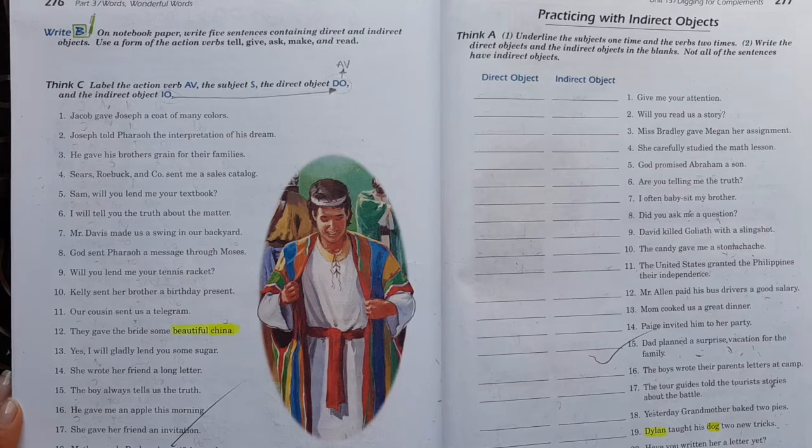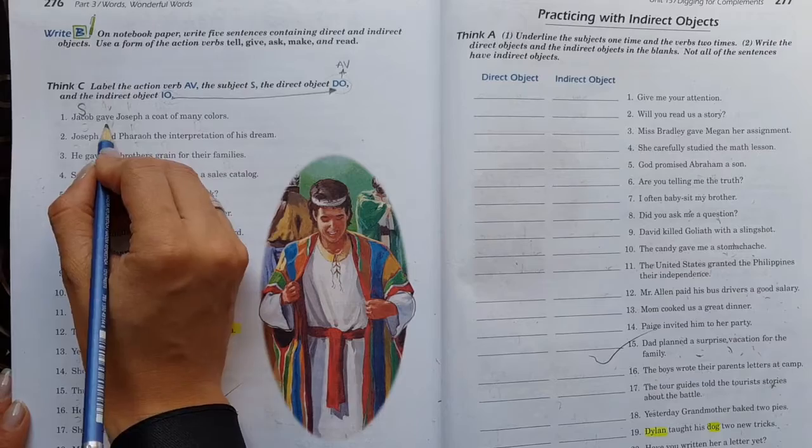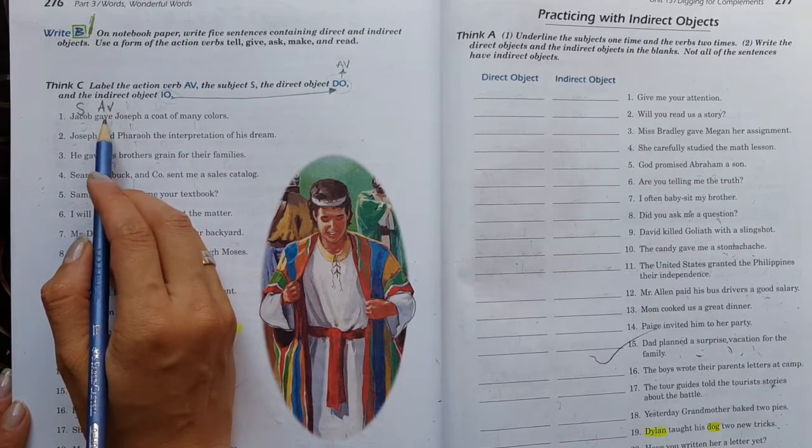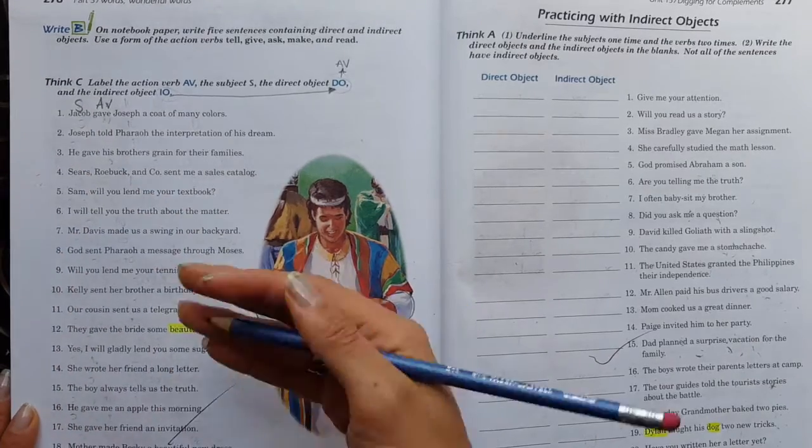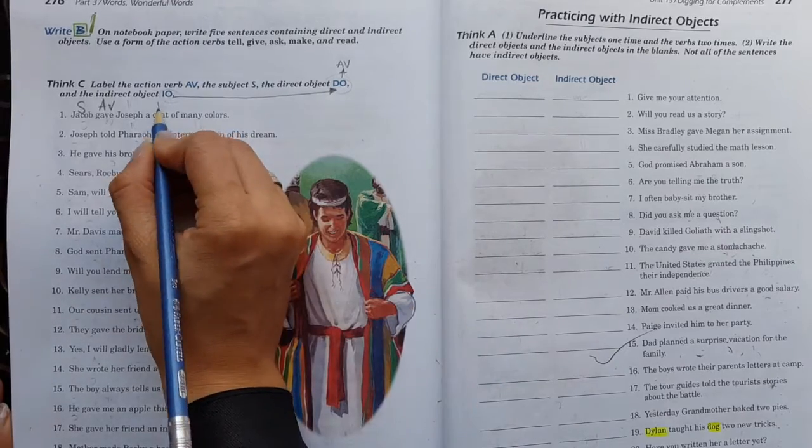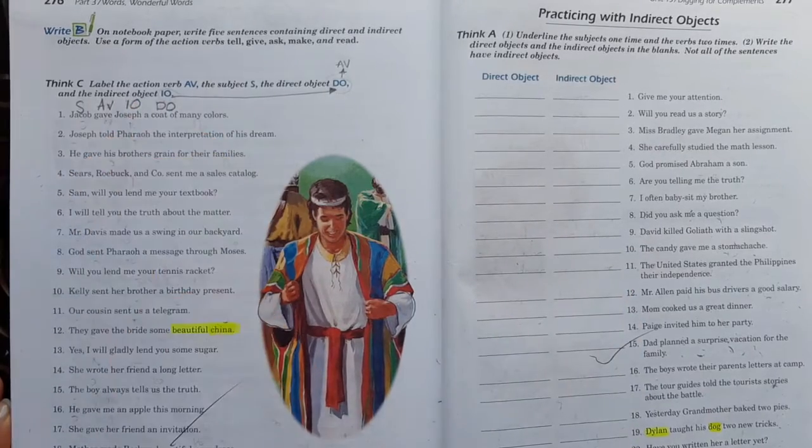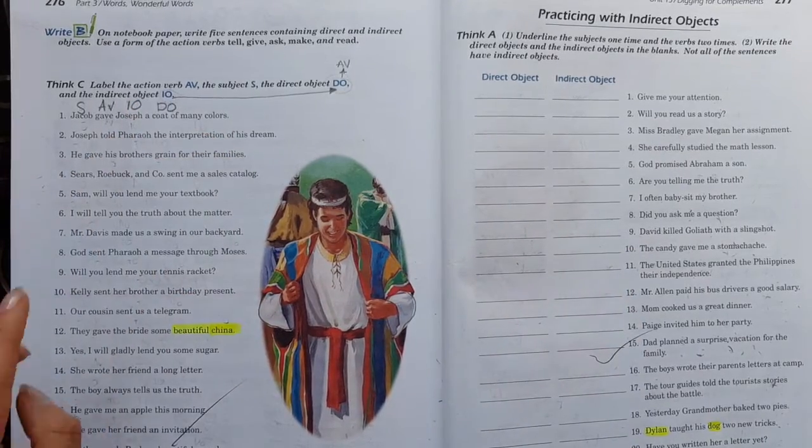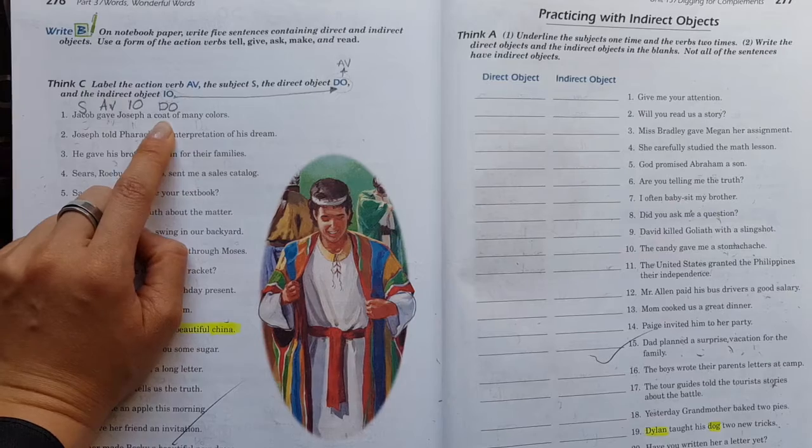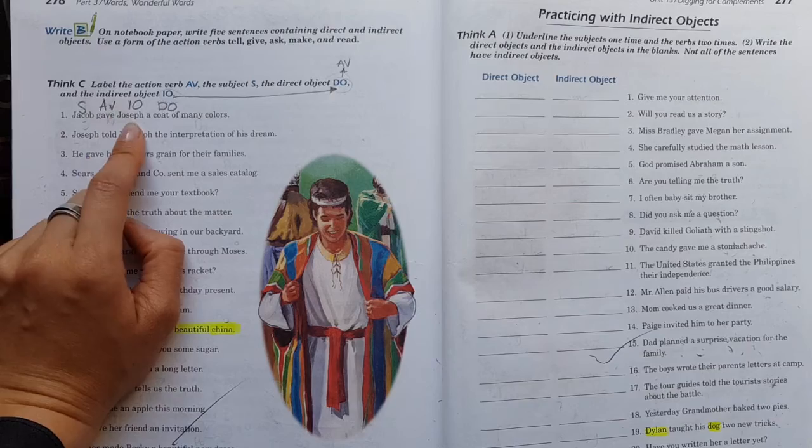Number one says, Jacob gave Joseph a coat of many colors. Jacob, ese, le dio action verb. Ponle cuidado. Le dio qué. Gave. Dio. ¿Qué dio? Ahí es donde tú tienes que entender la lógica. Le dio un abrigo. Y ese abrigo, ¿a quién se lo dio? A Joseph.